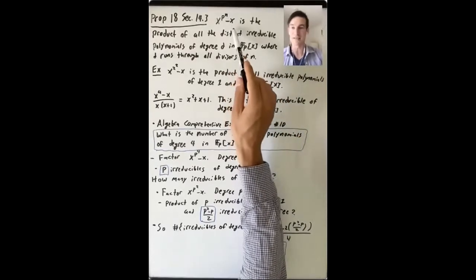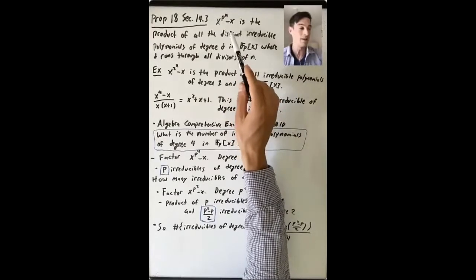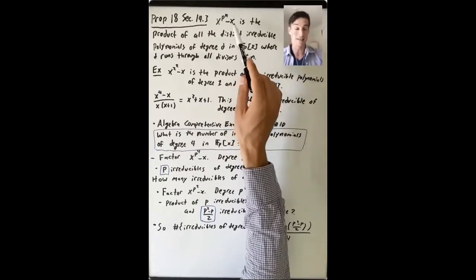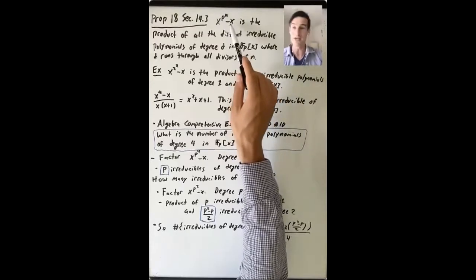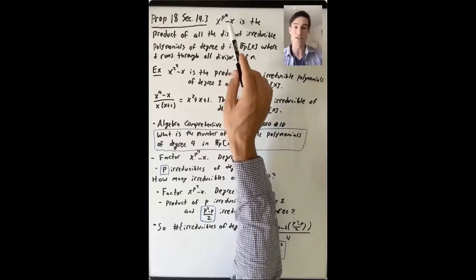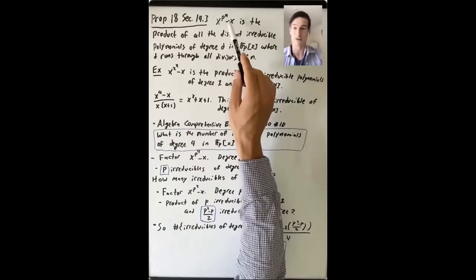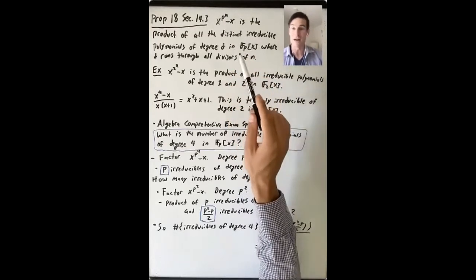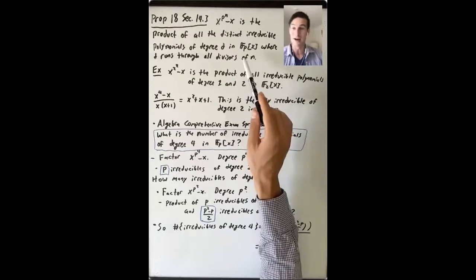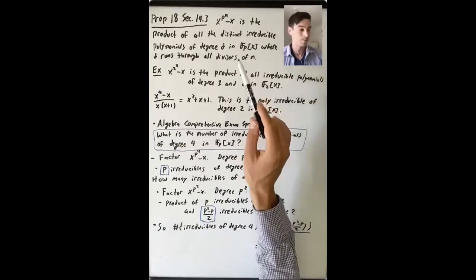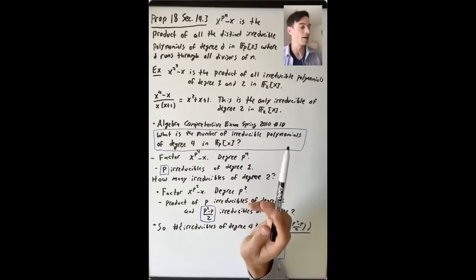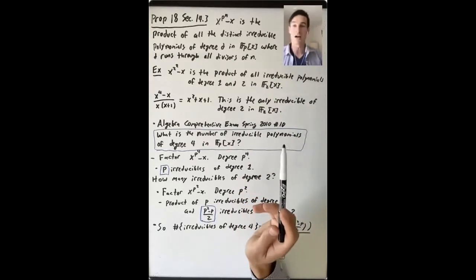Why is this an interesting or important result? Because we know that F_{p^n} is the splitting field of this polynomial over F_p, but we haven't actually talked yet about how to factor this polynomial. So now we understand how to factor x^(p^n) - x into a product of irreducible factors. Before proving this proposition, I want to talk about some things that you can do with it.